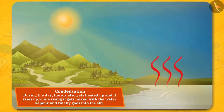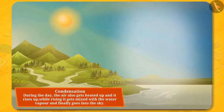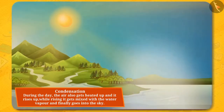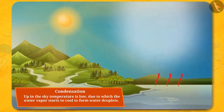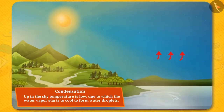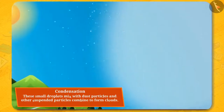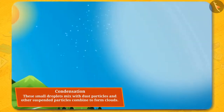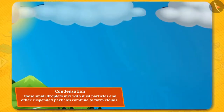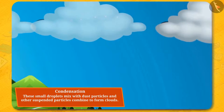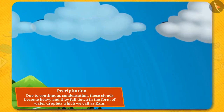Up in the sky, the temperature is low, due to which the water vapor starts to cool to form water droplets. These small droplets mixed with dust particles and other suspended particles combine to form clouds. This process is called condensation.